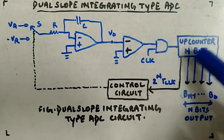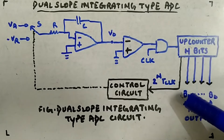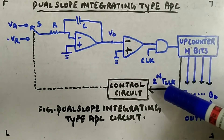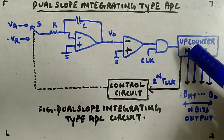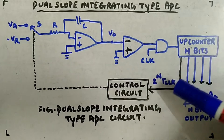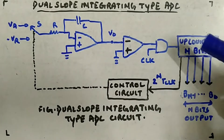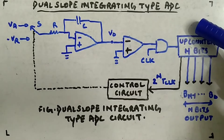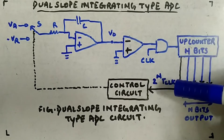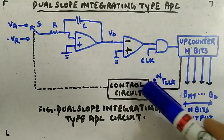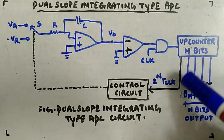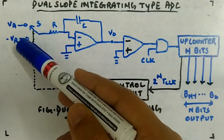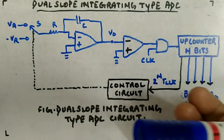Through the AND gate, clock is given to the up counter, and the up counter gives output b0 to b(n-1) — since it starts from zero, there are n minus one bit outputs. It also gives a signal when it is restarting again. It will restart after 2 to the power n times t_clock. The control circuit will see when the counter resets and will switch the input accordingly.